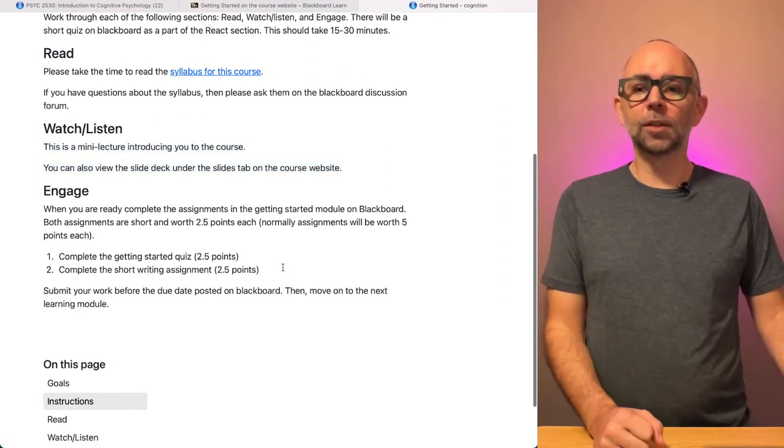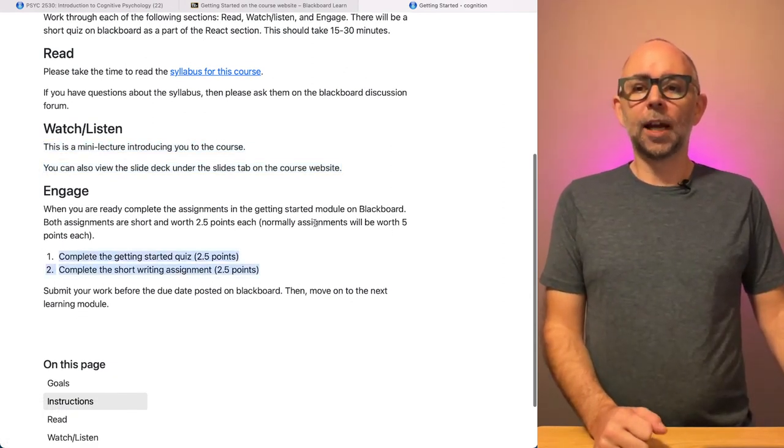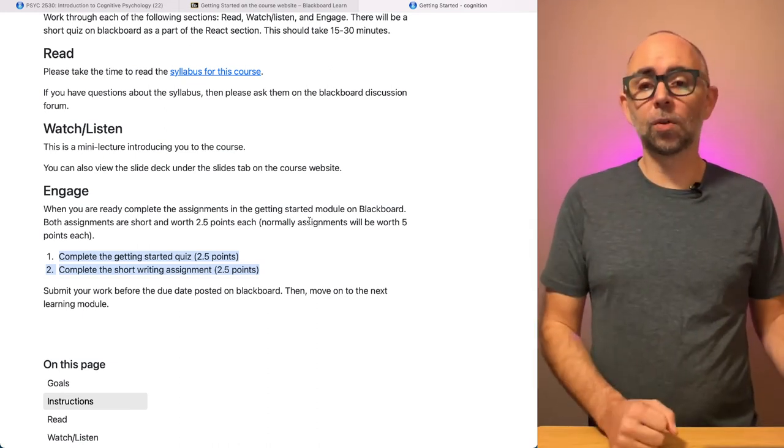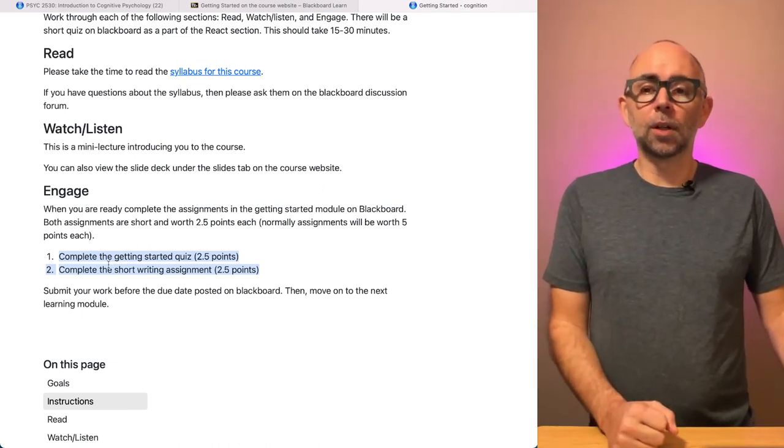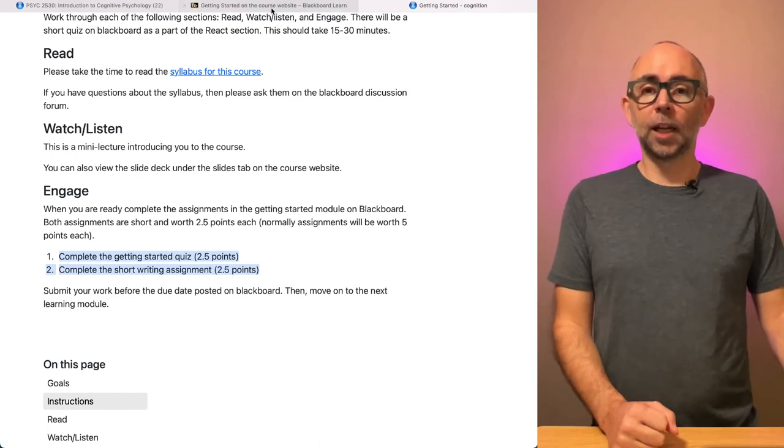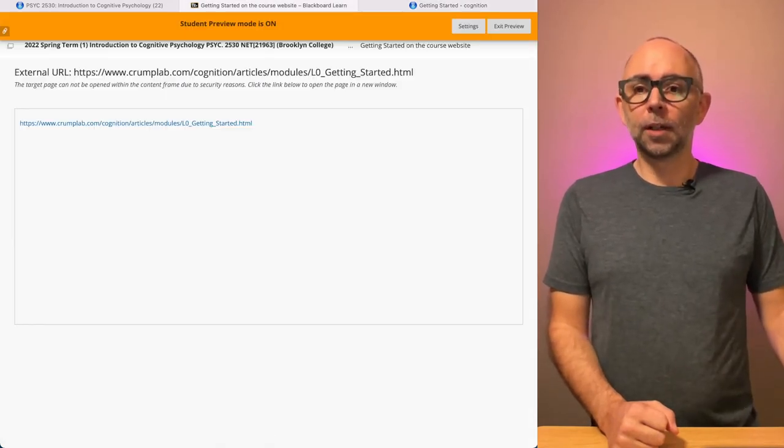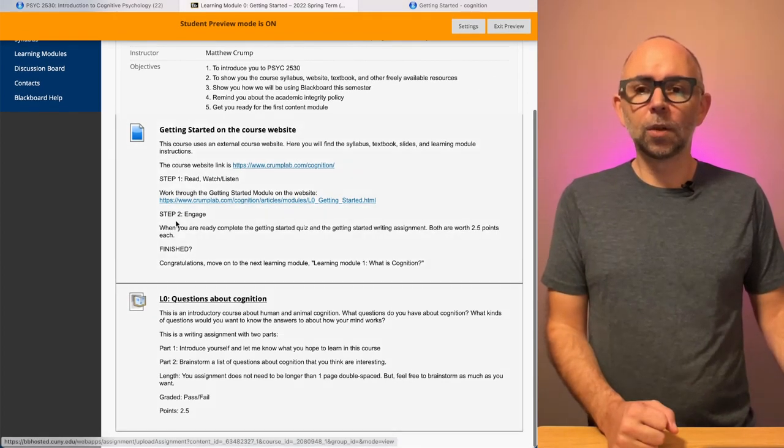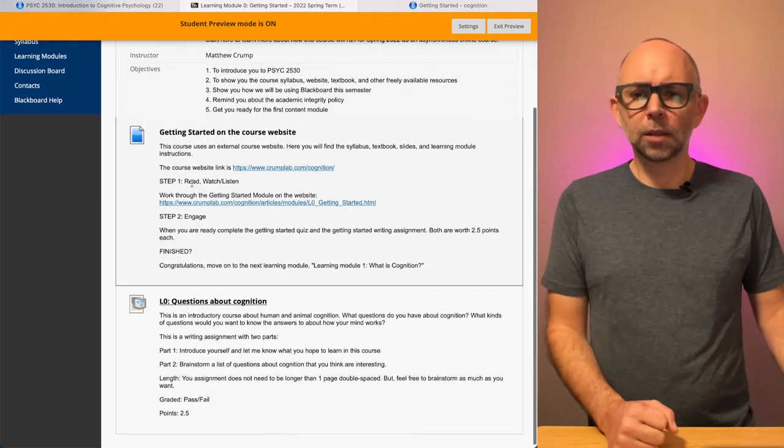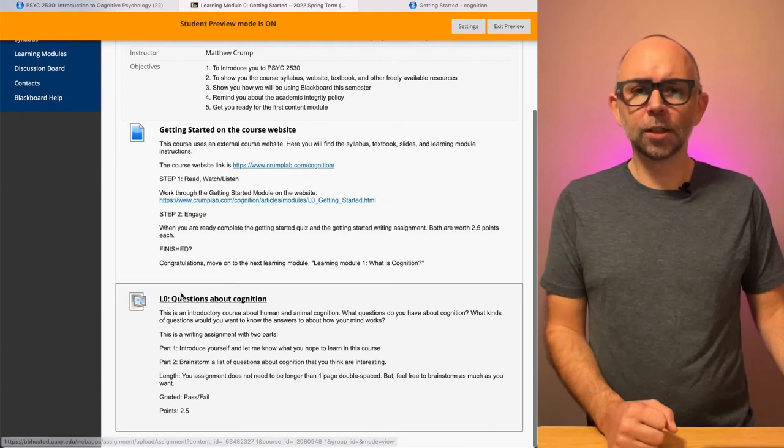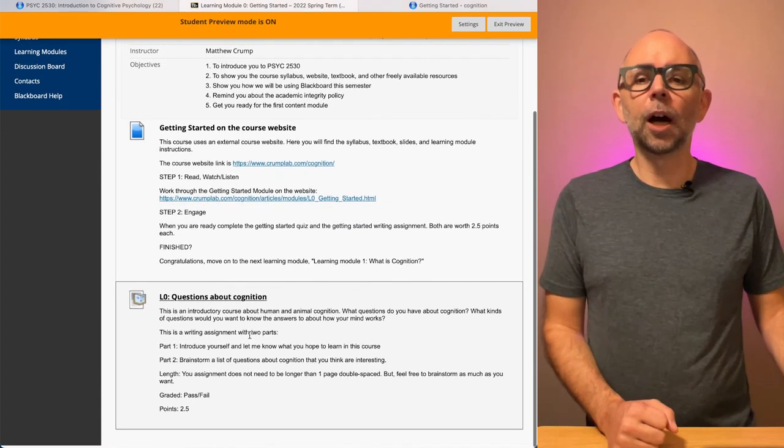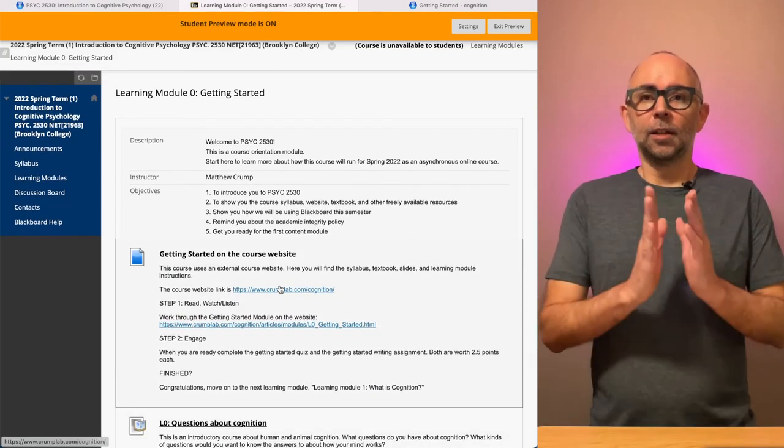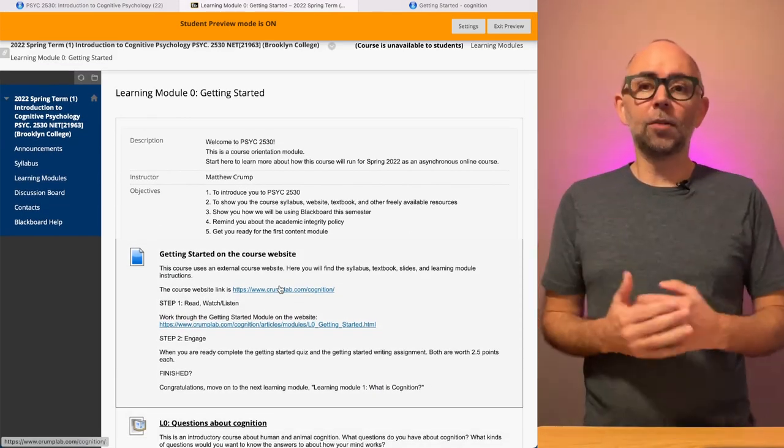And afterwards, you're going to be asked to engage with this content by doing a short quiz and or completing a short writing assignment. And those are right here. If you scroll down, you can see there is a, let's see, questions about cognition. This is a writing assignment. I don't see the quiz here. So that means I need to make it appear there.